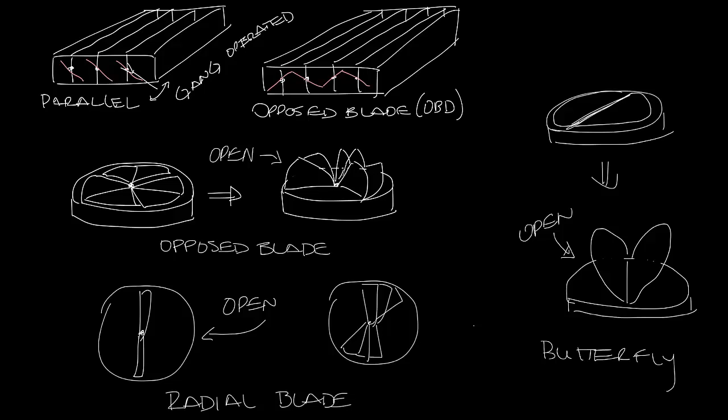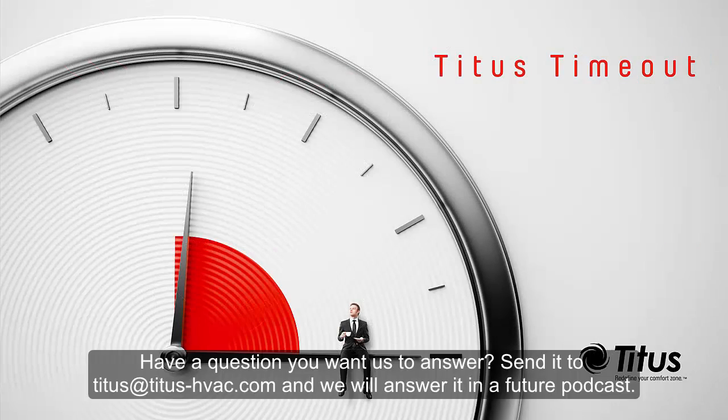So those are the common grill and diffuser damper types. Remember that when possible you should put the damper upstream of the grill or diffuser so that you don't affect the airflow performance and sound levels in the space. Don't forget to subscribe to our YouTube channel and thanks for taking a time out with us.